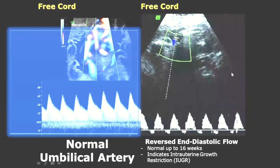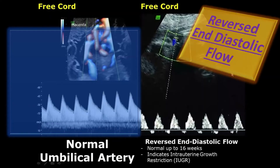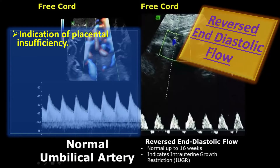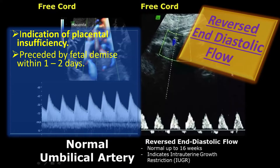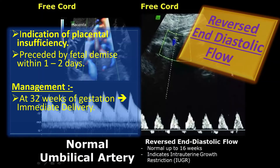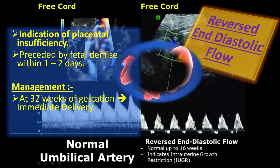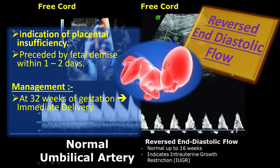How to manage reversed end-diastolic flow on Doppler ultrasound? Reversed end-diastolic velocity during pregnancy is a strong indication of placental insufficiency, preceded by fetal demise within one to two days. Management: if the patient is at 32 weeks of gestation, consider immediate delivery. If she is at less than 34 weeks, give steroid cover and deliver.